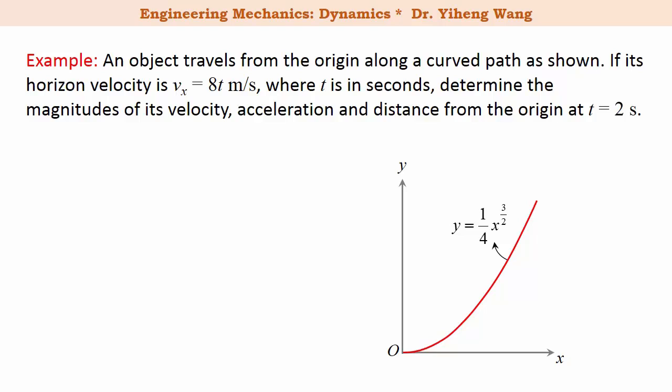Since vx equals to dx over dt, we can use the vx function to first find the horizontal position x as a function of time. Since vx equals to dx over dt equals to eight times time, through simple integration we can get x the horizontal position equals to four t squared.